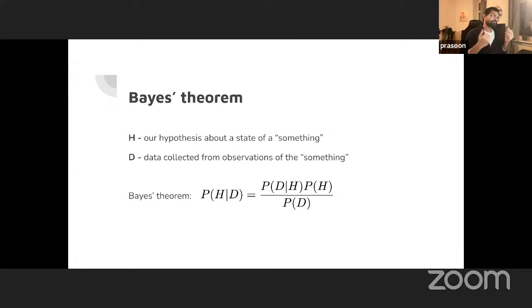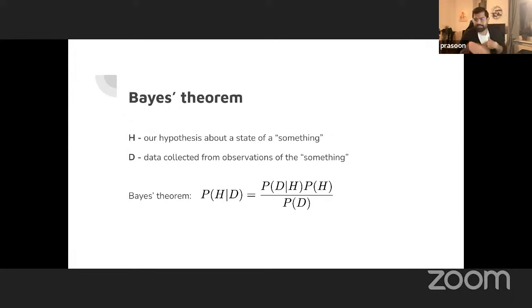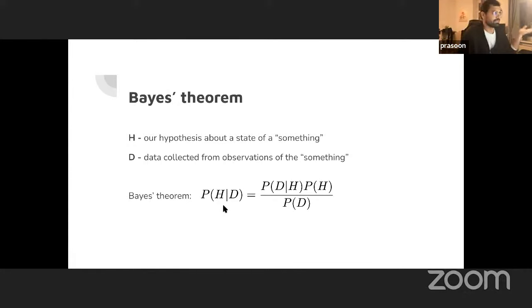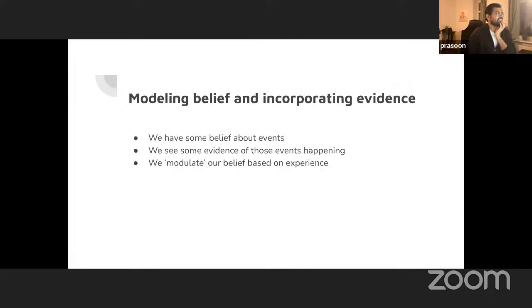Our hypothesis is our existing belief about what the event should be — in this case, that a coin should land 50% heads and 50% tails. Bayes' theorem says: if you multiply the probability of the data given the hypothesis times the probability distribution of the hypothesis, you get the posterior.